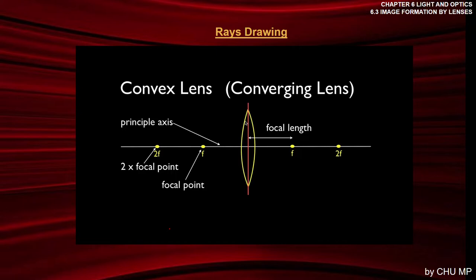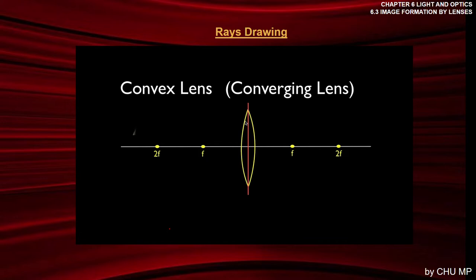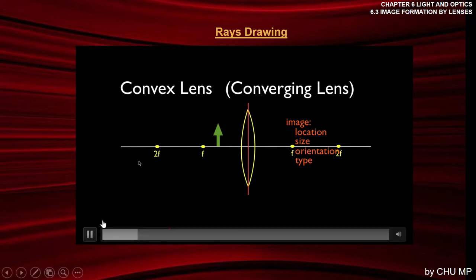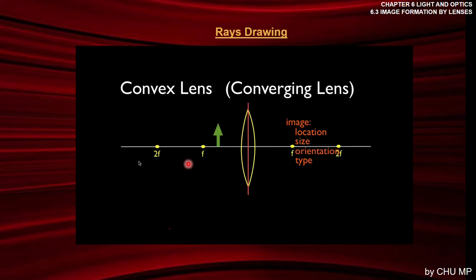This is a bi-convex lens, so there is a focal point F and a point 2F on each side of the lens. By the end of this video, you should be able to draw the ray diagram to locate the image for any position of the object. We'll start with the object beyond 2F, then at 2F, between F and 2F, at F, and finally inside F. You should also know where the image will be before you draw.